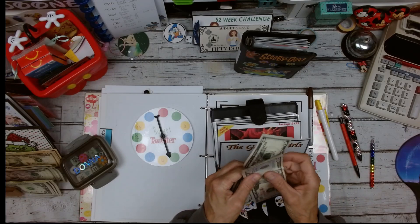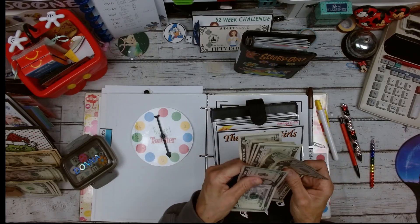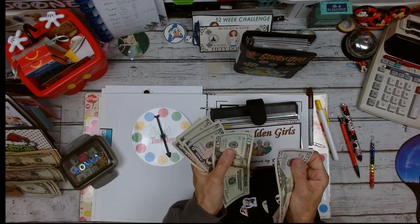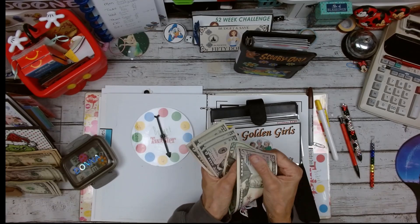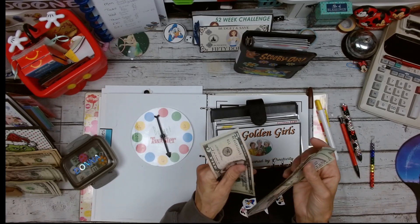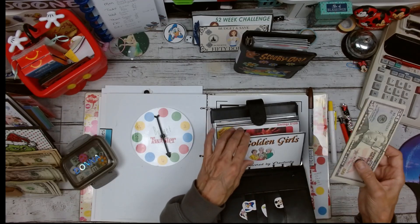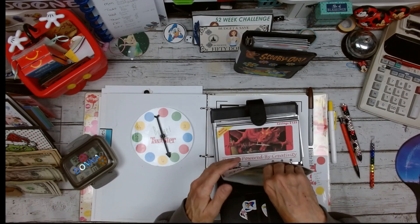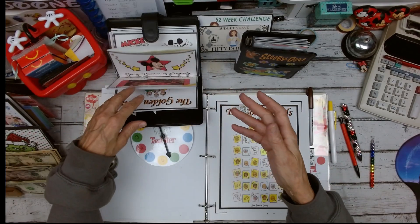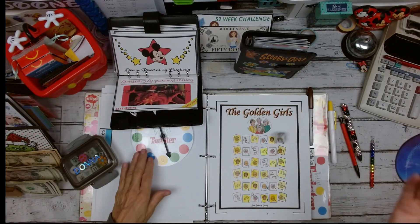Okay. Just switching things up. I don't know. I just felt like it. Golden girls has $95 saved. And we're on a roll with those 90s, right?